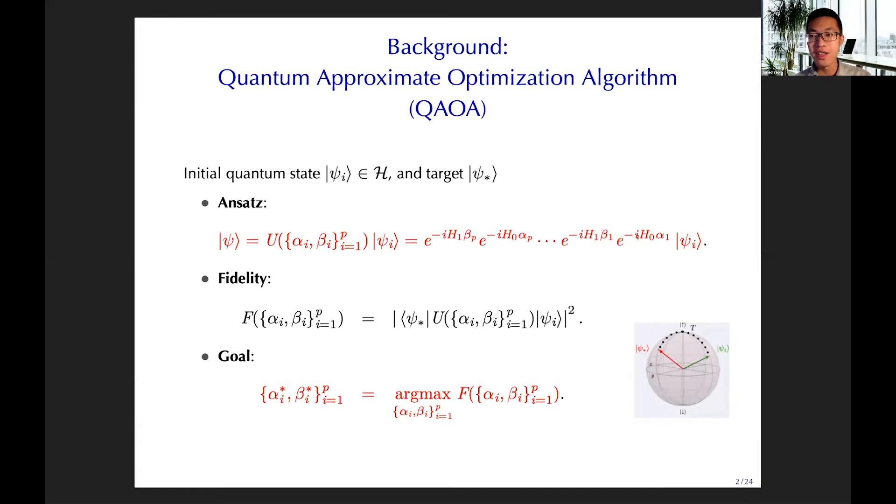The answer is an alternating sequence of the unitaries given by the H0 and H1 and QAOA angles, alpha and beta. The fidelity is computed as the overlap between the quantum targets and the evolved quantum state. Our goal is finding a quantum control that is alpha and beta to make this fidelity larger.